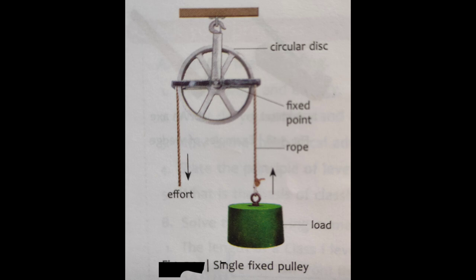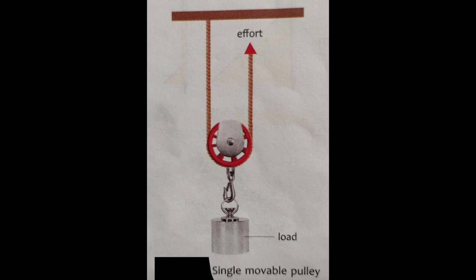Now we come to know about the pulley. There are two types: the single fixed pulley and the single movable pulley. A pulley is a wheel or circular disc that can rotate freely about a fixed point. Here is a picture of a single fixed pulley with its different labeled parts — you must learn to draw them as they may appear in exams. The single movable pulley is used mainly in factories where heavy objects are lifted. In a single movable pulley, the axis of rotation is not fixed.